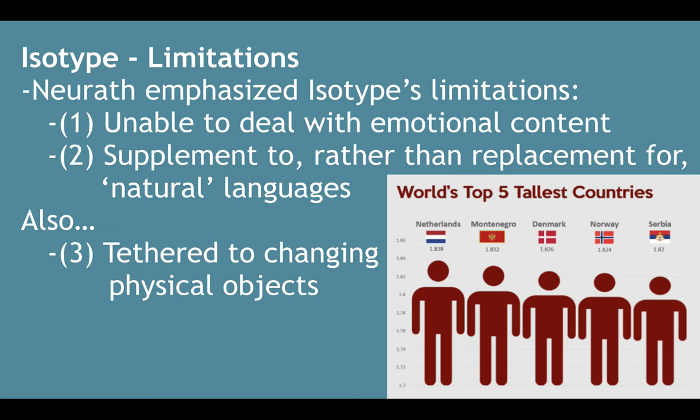However, isotypes don't have infinite abilities. They have some limitations that Neurath himself talks about. If you have emotional content, they seem unable to convey that. He wanted to make it very clear that isotypes are a supplement to, rather than a replacement for, natural languages — there's a limit to how much they can communicate, and spoken or written word is more precise and can do more things.